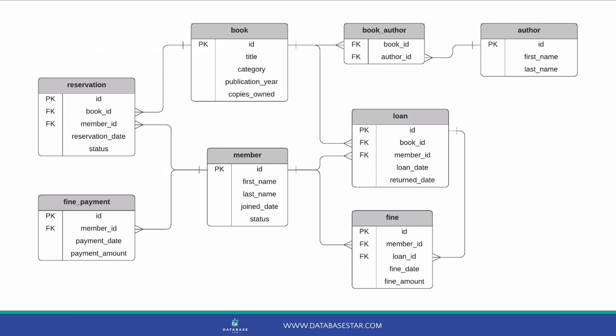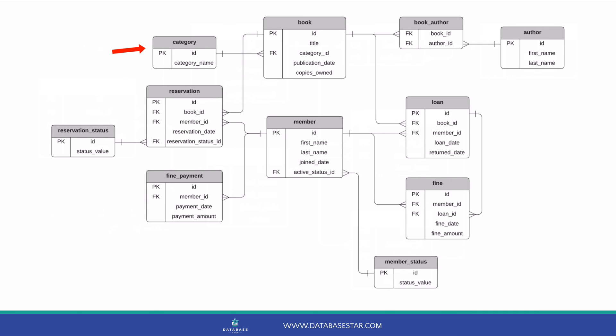We've added a book_category table with an ID and a category, and linked it to the book table using the ID. This improves our data quality. We can do the same with the reservation status and member status, creating a separate table for the status values and linking them using the ID. This is our final ERD for the library management system — it meets all the requirements we have, and we've used a couple of techniques to improve data quality. There's a link to the image of this ERD in the description if you want to save it.